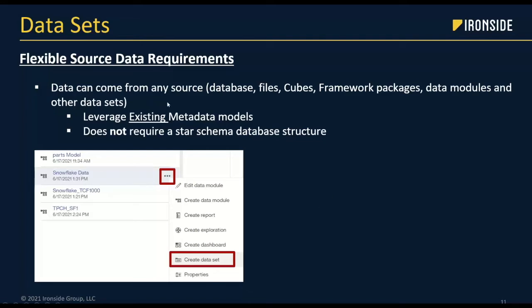Unlike Dynamic Cubes, data sets allow you to use any data source. You can pull in data from a database, upload files, pull from existing cubes or Framework Manager packages, and leverage data from other data modules or data sets. You can have a data set built from another data set. This is one of the most powerful things — you can pull data from any source, and because it's loaded into a parquet file, it doesn't matter where it came from. You can combine any structure you need without requiring a snowflake or star schema.